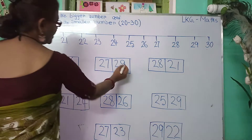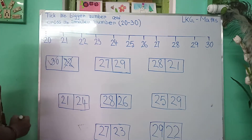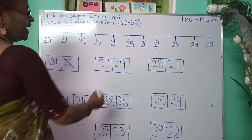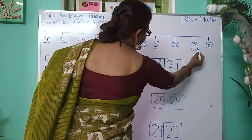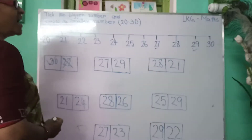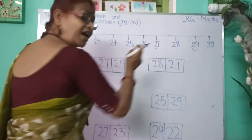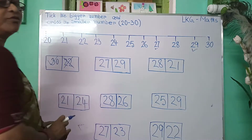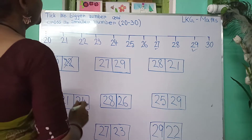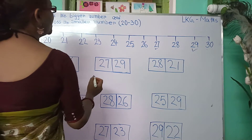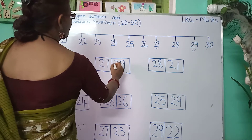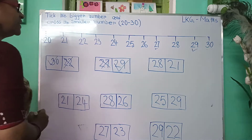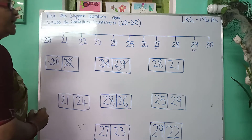I will tick the bigger number and cross the smaller number. Here, 27 and 29. Where is 27? Here is 27. And where is 29? Here is 29. Which have I written first? I have written 27 first, then 29. So, 27 is the first number and 29 is the last number. The last number will be the bigger number, so I will put a tick on 29 and 27 is the smaller number.